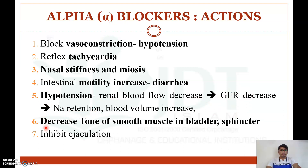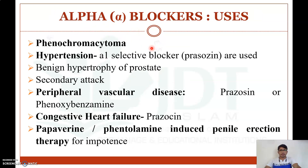Overall, the renal glomerular filtration rate gets decreased. Alpha blockers also decrease the smooth muscles of the bladder and sphincter and inhibit ejaculation. These are the different actions of alpha blockers.